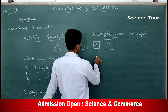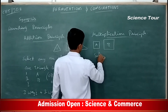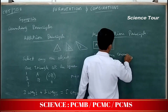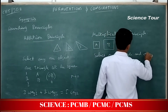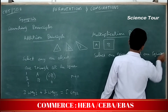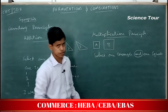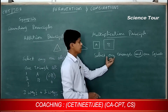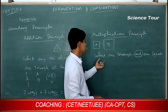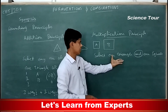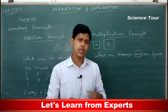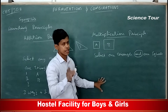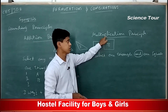Now for the multiplication principle — what you are asked to select? You are asked to select one triangle and one square. The word 'and' is very important here; that is the keyword you have to watch out for. How many ways can you perform this task? We have to make use of the multiplication principle.